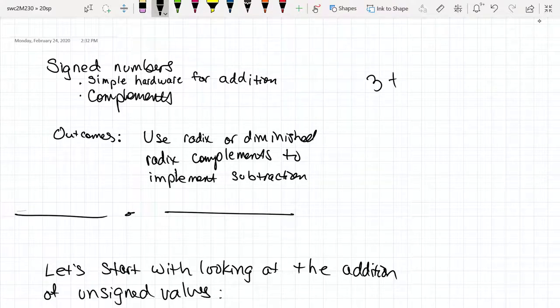This process of negating values so that we can do subtraction. By negating, I mean if I wanted to do something like 3 minus 4, what I really could do is, once I have my adder, just add a negative 4.